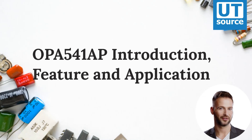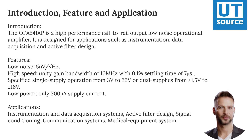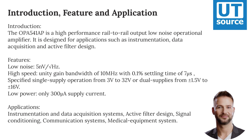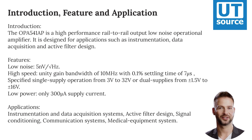OPA541-AP Introduction, Feature, and Application. The OPA541-AP is a high-performance rail-to-rail output low-noise operational amplifier. It is designed for applications such as instrumentation, data acquisition, and active filter design.